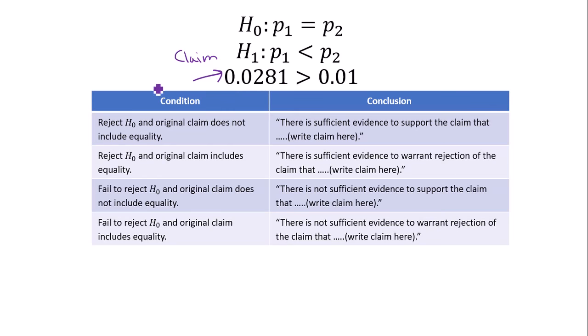Our p-value is being compared to alpha. In this case, the p-value of 0.0281 is greater than 0.01. As a result, we fail to reject the null hypothesis.